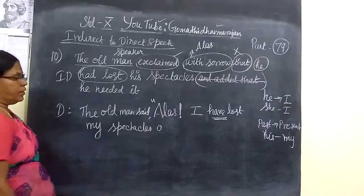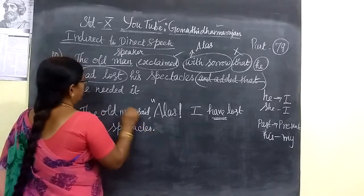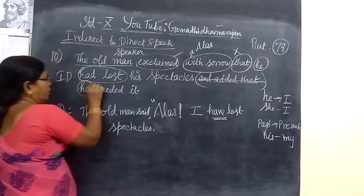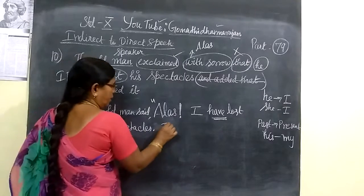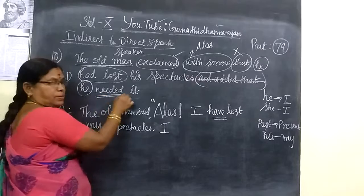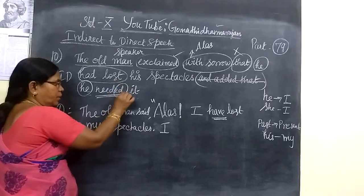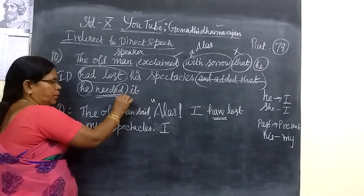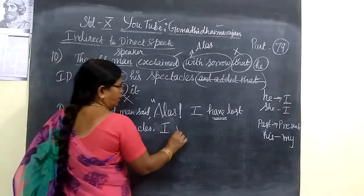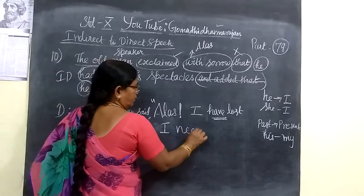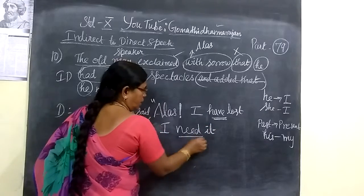This is the second sentence. So you put a full stop. Then 'he' is again changed into 'I', and this is past tense — past tense is changed into present tense. So what is it? It is written: 'I need it'.